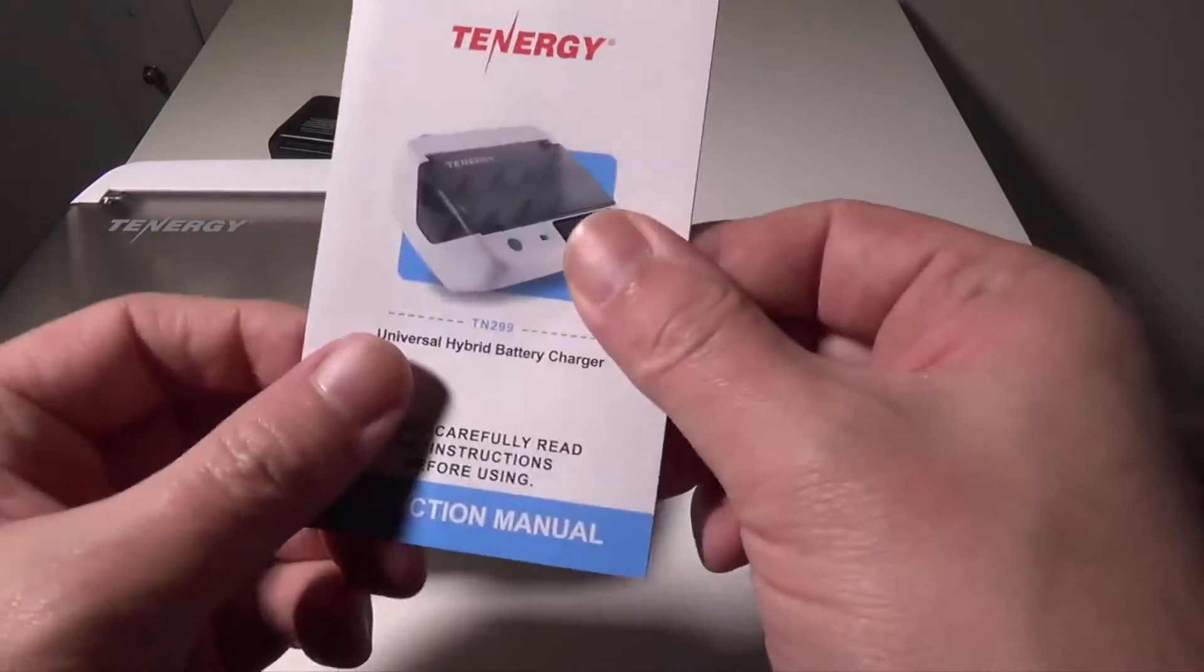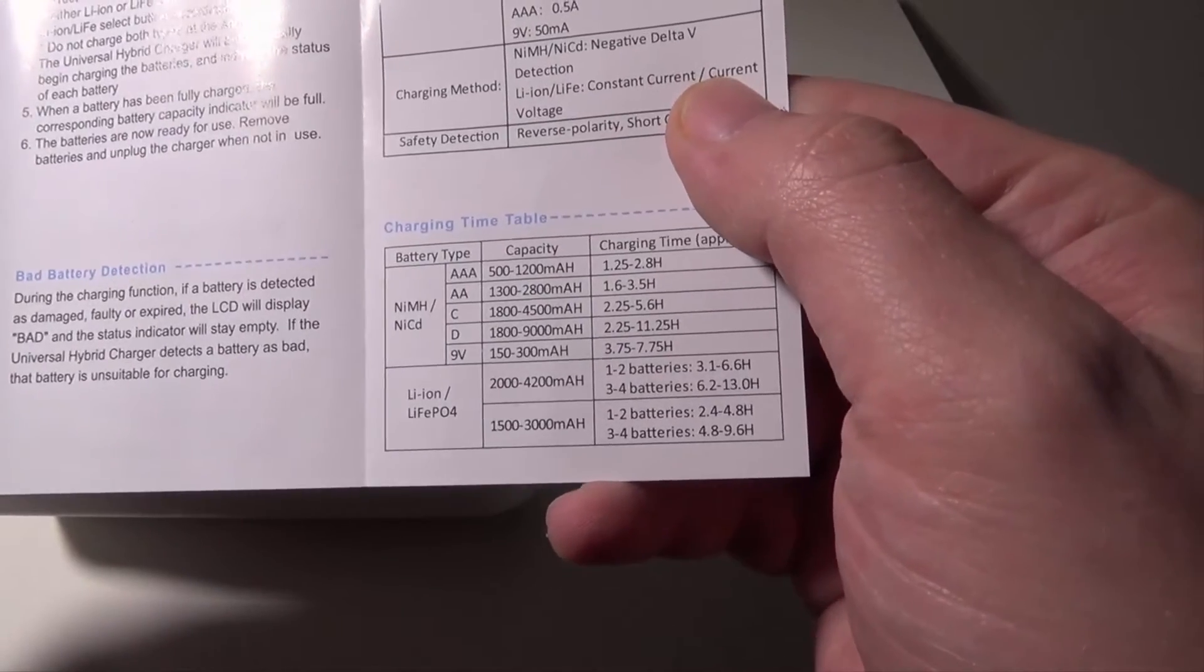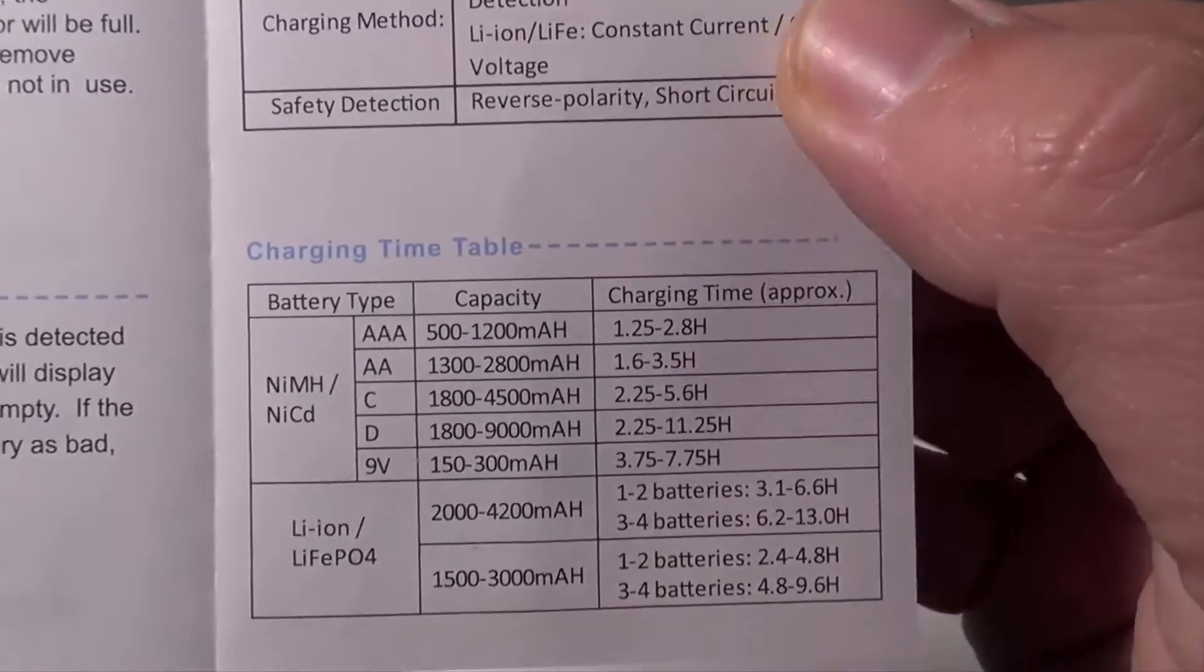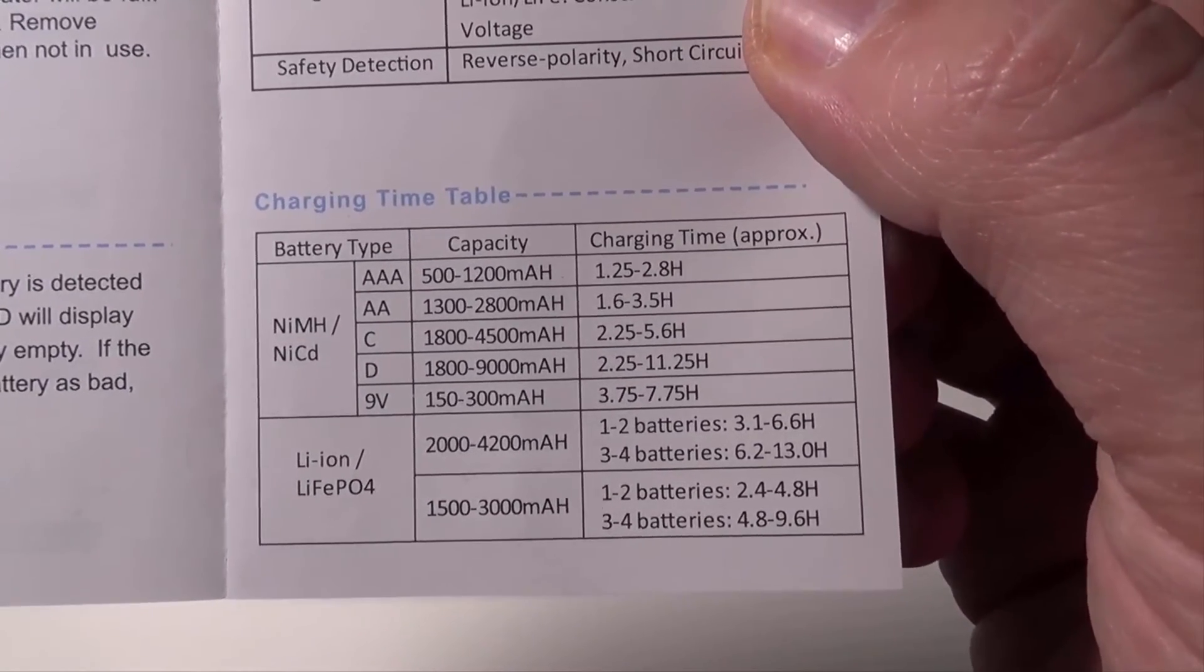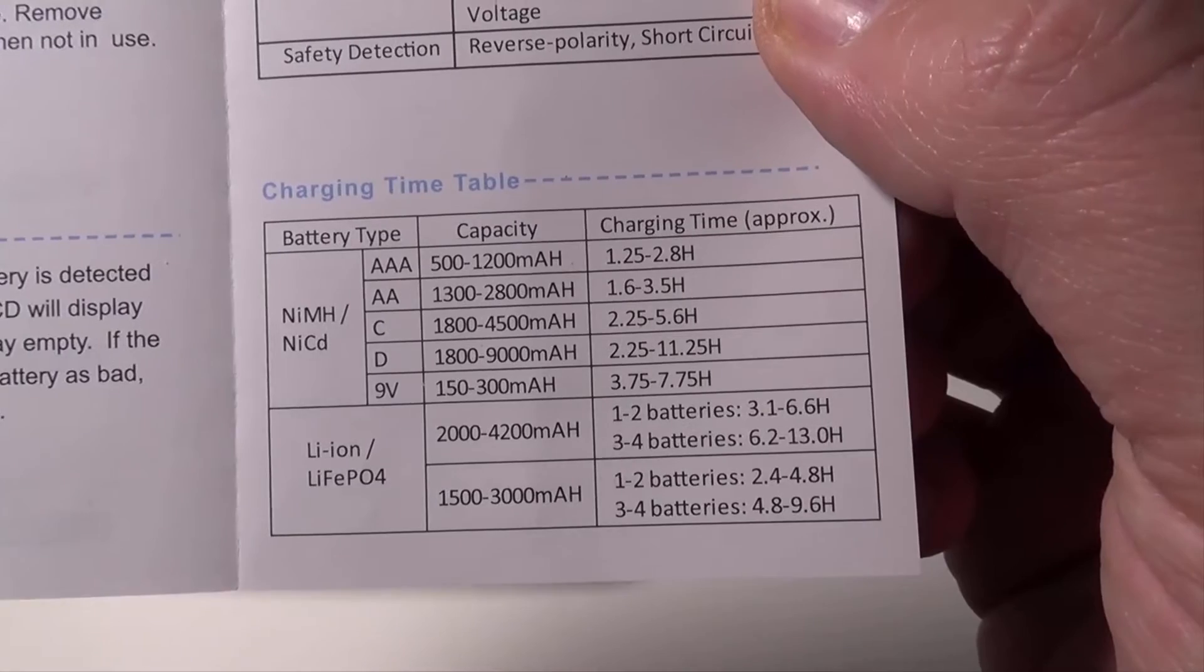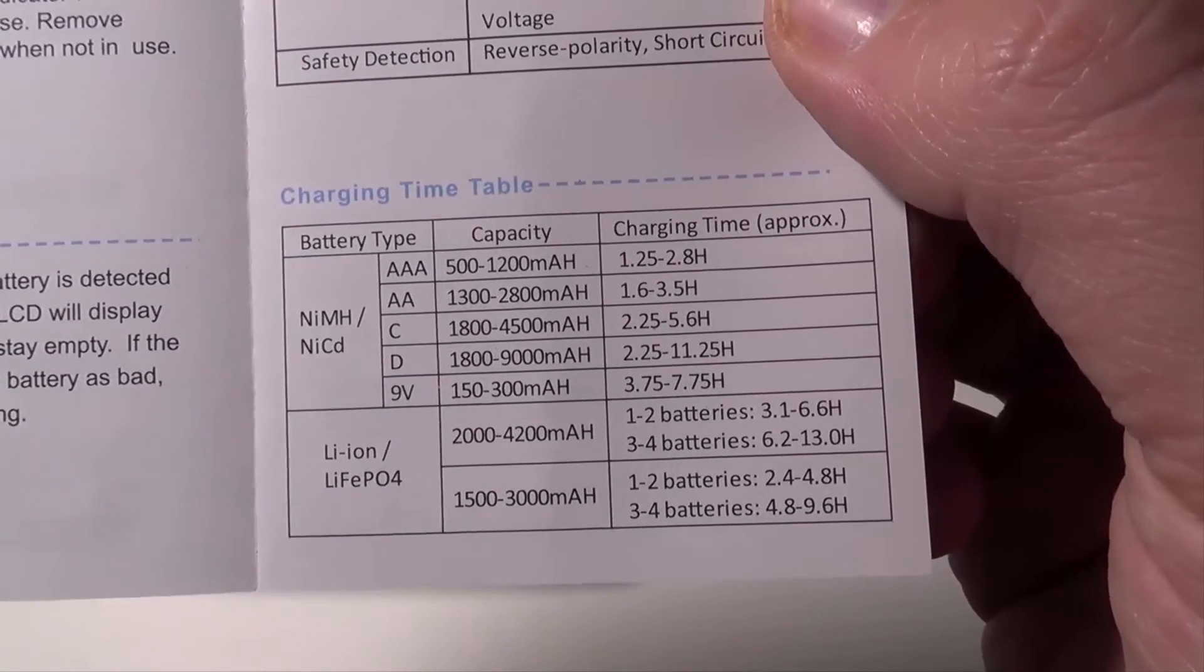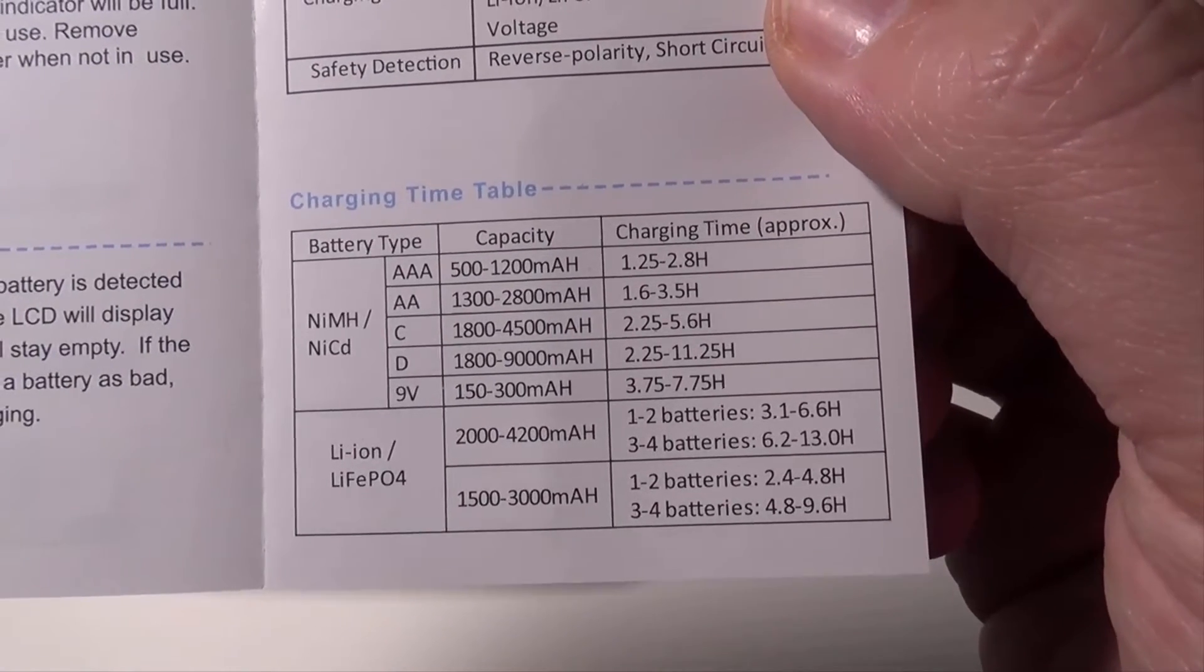They go over most of the stuff we've already gone over as far as the charge currents on all these, which again I'll leave this up for the charge time table. Your triple-A batteries will take about 1.5 to 2.5 hours. Your double-As will take 1.6 to 3.5 hours depending on the battery. Obviously they make different ones - triple-As from 500 to 1200 milliamps, and then you've got 1300 to 2800 milliamps.